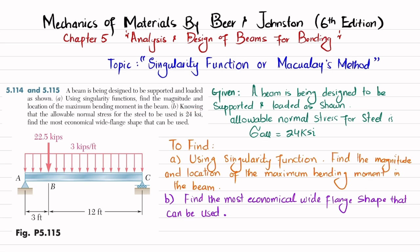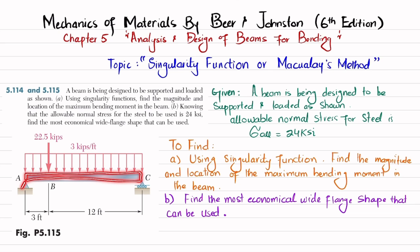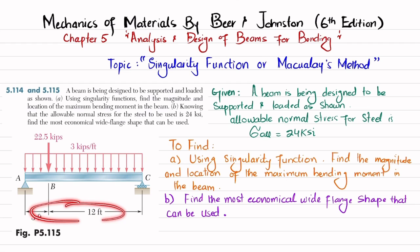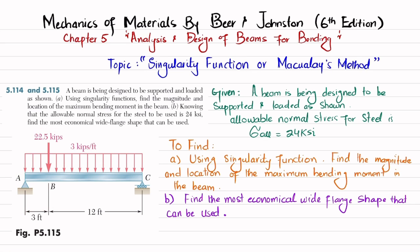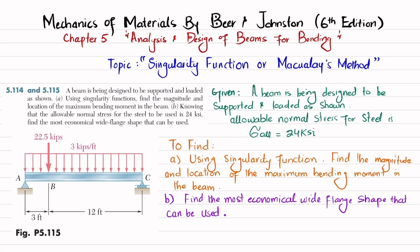In part (b), knowing that the allowable normal stress for the steel to be used is 24 ksi, find the most economical wide-flange shape that can be used. You can see this is a simply supported beam with a pin support and roller support at both ends. There is a distributed load of 3 kips per feet over a length of 15 feet, and a point load of 22.5 kips at a distance of 3 feet from point A.